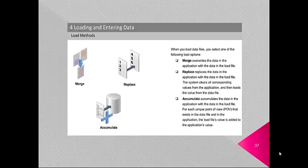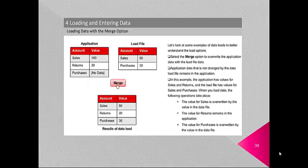Merge overrides the data in the application with the data in the load file; application data not changed by the load file remains in the application. Replace replaces the data in the application with the data in the load file — the system clears all corresponding values from the application and then loads values from the data file. Accumulate adds the data in the load file to the application values; for each unique point of view existing in both the data file and the application, the load file value is added to the application value.